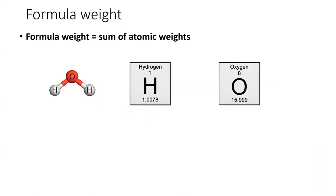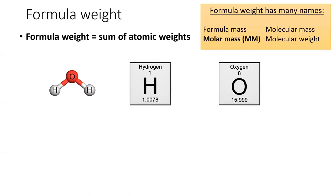The formula weight for a compound is the sum of the weights of the atoms within that compound. There are many names for formula weight, shown in the yellow box. I think the most common name is molar mass, which we abbreviate MM.